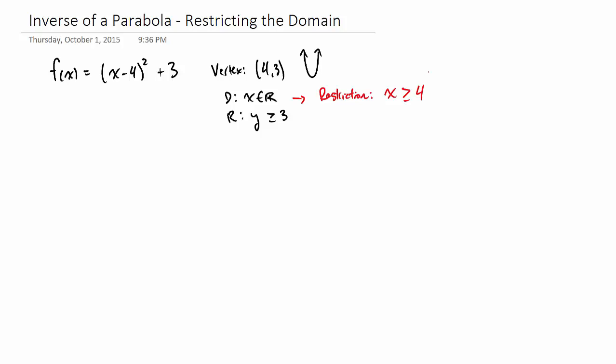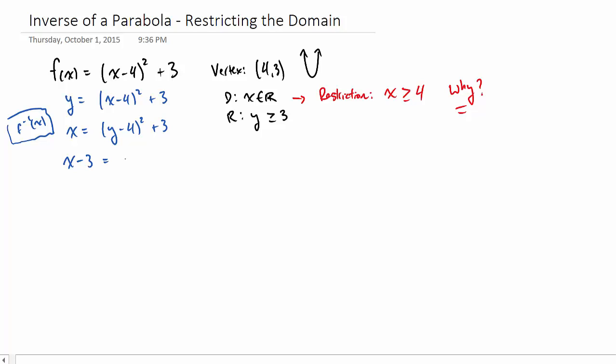Of course the question is why x is greater than 4, and first of all why is it a problem anyway? So to figure this out, we're going to need to actually find the inverse function. We'll do this algebraically by swapping x and y, and then we'll solve for y. So rearrange the equation. We have to square root both sides, and because of the square root property,